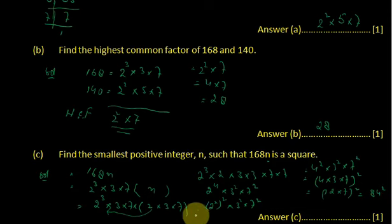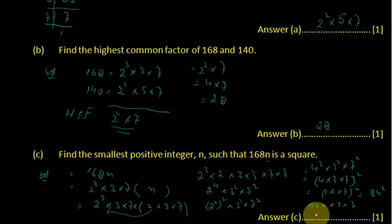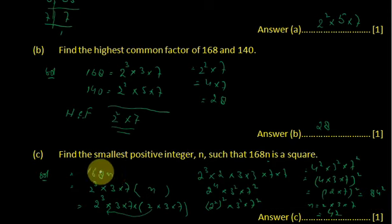So n is basically 2 multiplied by 3 multiplied by 7, which is 42. If we multiply 168 by 42, it becomes the square of 84. So 168n is a square number when n equals 42.